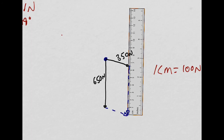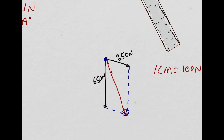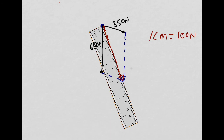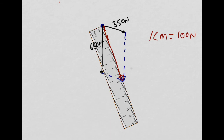I get a parallelogram of forces with the resultant force. Using the ruler to measure it, that looks like 8.2, which gives 820 newtons with our scale factor.